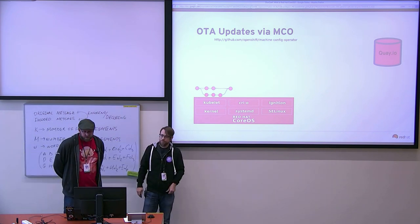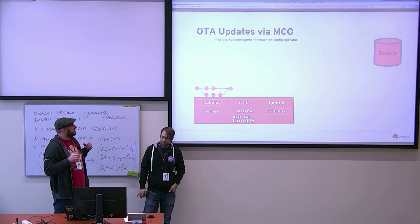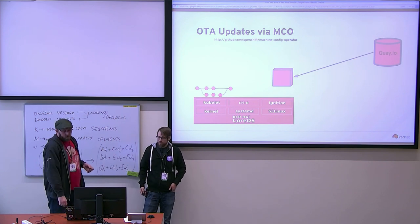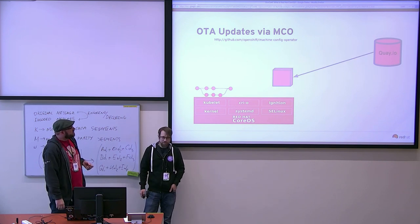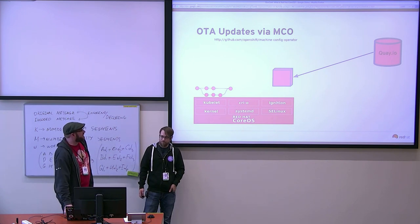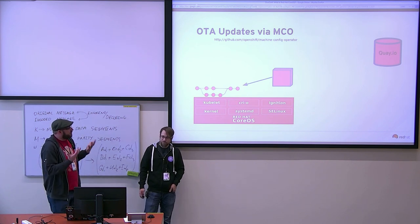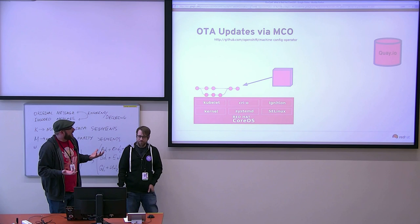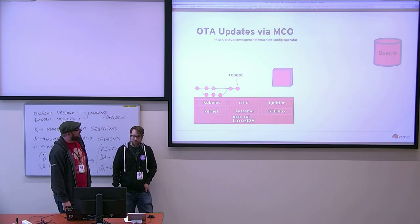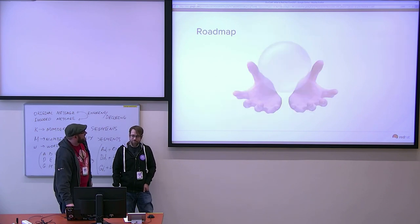Over-the-air updates work like this: we have a running system, we pull down a container out of Quay, mount it — there's no process running inside, it's just a flat container with files — pull in the updates that the operating system needs for the next version, then point at that next version and reboot. We call it the Pivot, and it is super easy and fast.